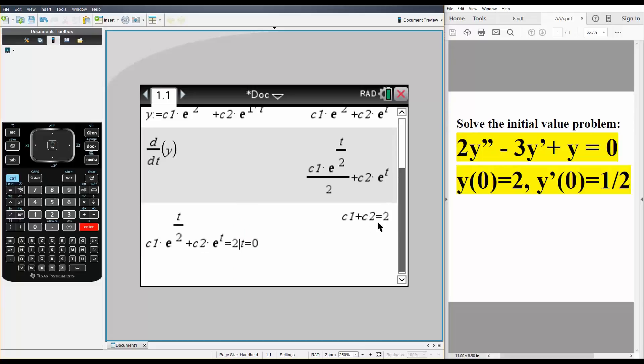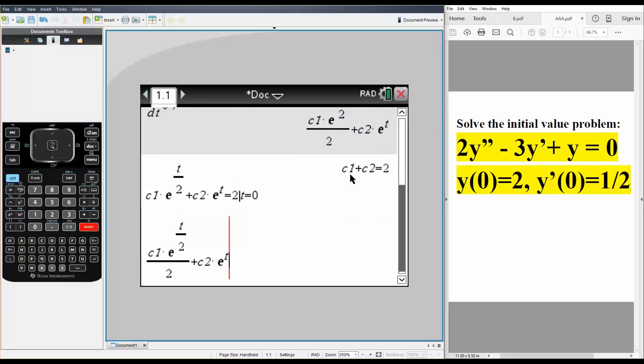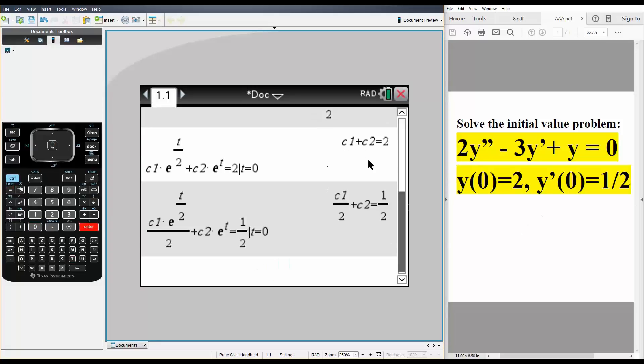And next we do the same thing for the derivative one. So we go up, select it, this is going to equal to 1/2, ctrl equal we set it. And likewise t is equal to 0, and this is our second equation.